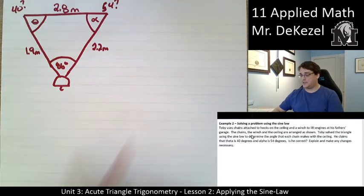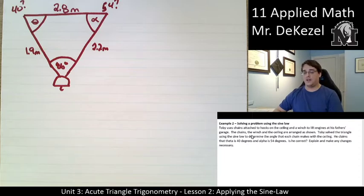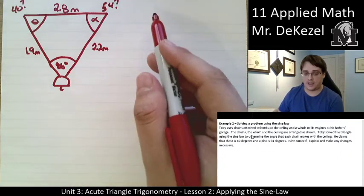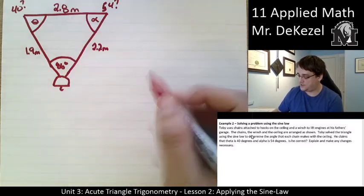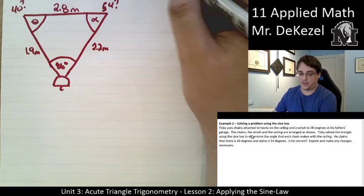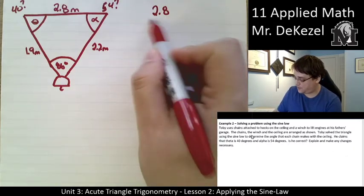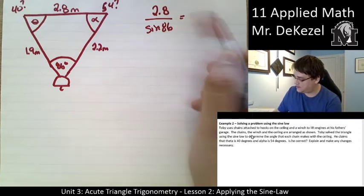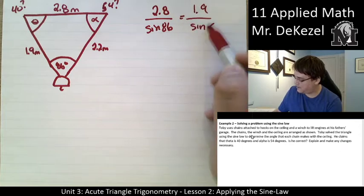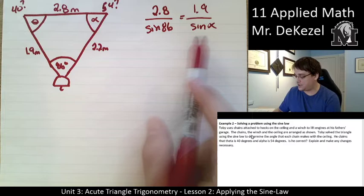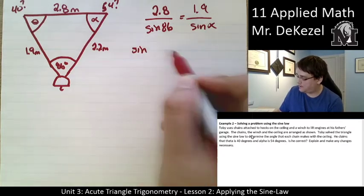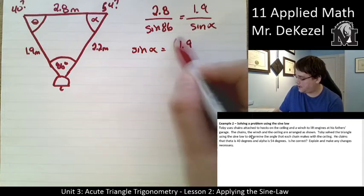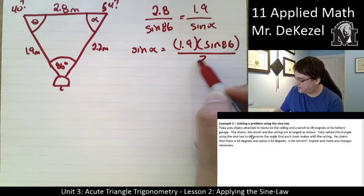What we're going to do is determine if those angles are correct and explain if he needs to make any changes. Let's find out what angle alpha is first. So we have the side across from it. We have this side angle pair. It's always the side over the angle. So we're going to have 2.8 over the sine of 86 is equal to 1.9 over the sine of alpha. We rearrange for the sine of alpha. We end up with sine of alpha equal to 1.9 times the sine of 86 divided by 2.8.